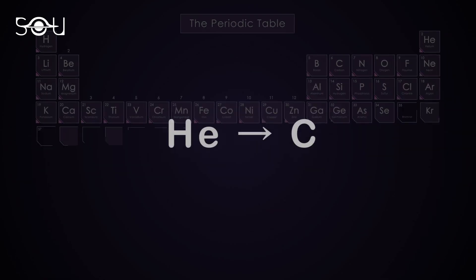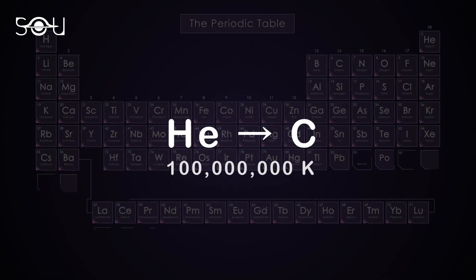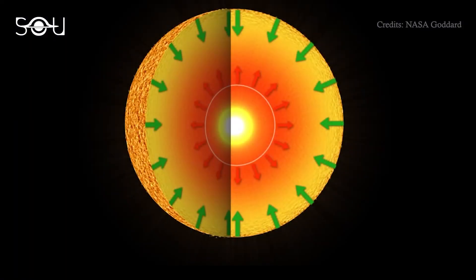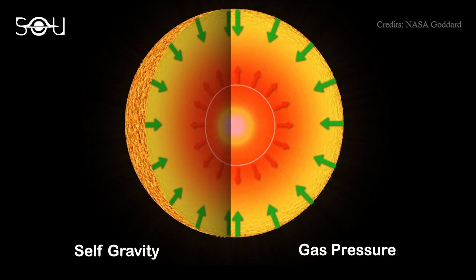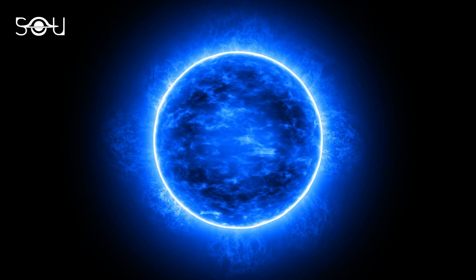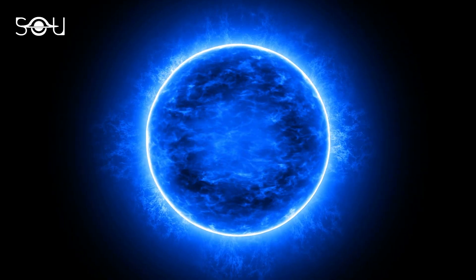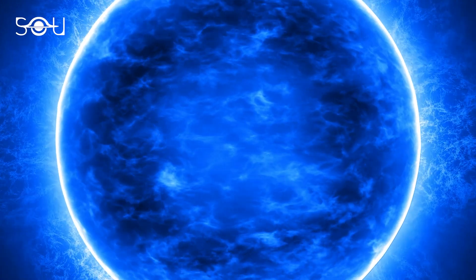That's because the subsequent fusion reaction, converting helium to carbon, requires a temperature of 100 million Kelvin, which is simply not there. In the absence of a nuclear fusion reaction, the balance of two forces is disturbed and gravity starts crushing the star. This gravitational collapse proves to be a blessing in disguise as it further increases the star's temperature.